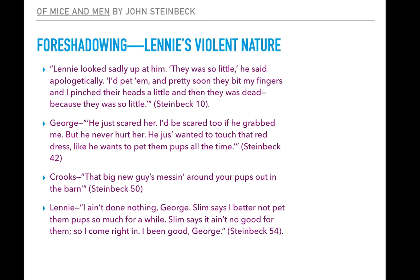All of these things foreshadow the fact that he's becoming more and more violent. He eventually kills his own pup and then that leads to the murder of Curly's wife. Did you figure that out? Did you predict that and pick up on the hints earlier in the novel — the foreshadowing that the author did?